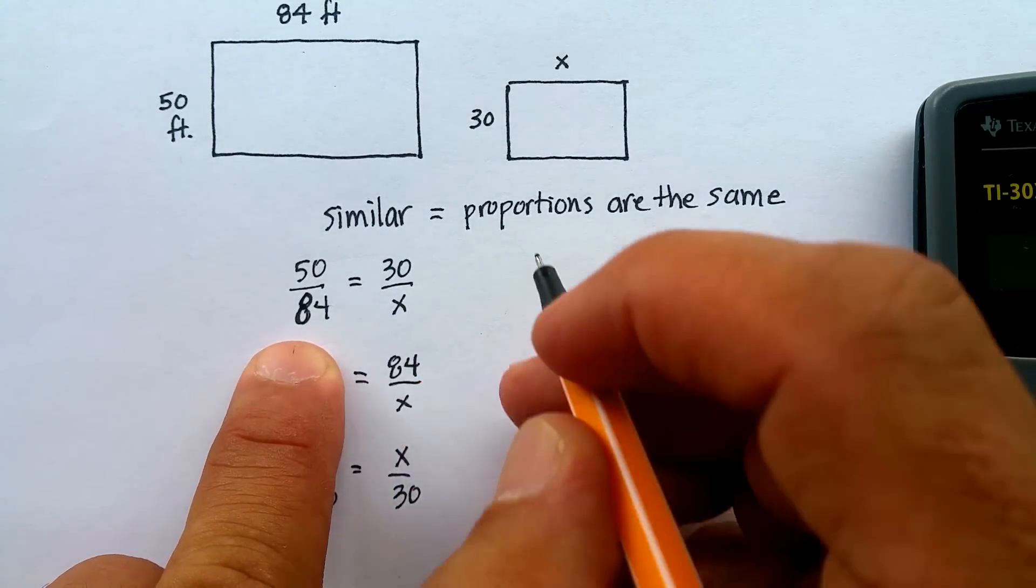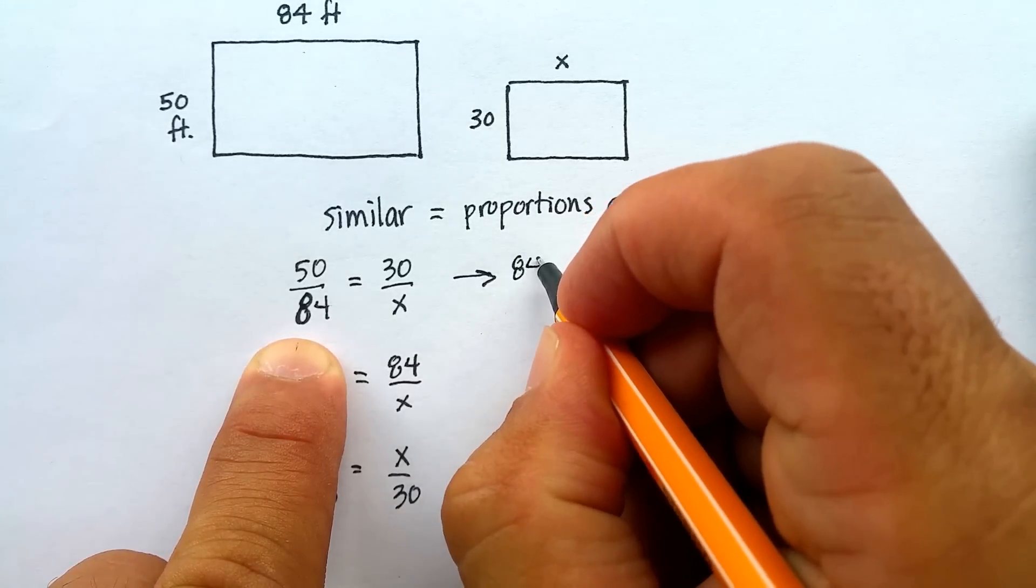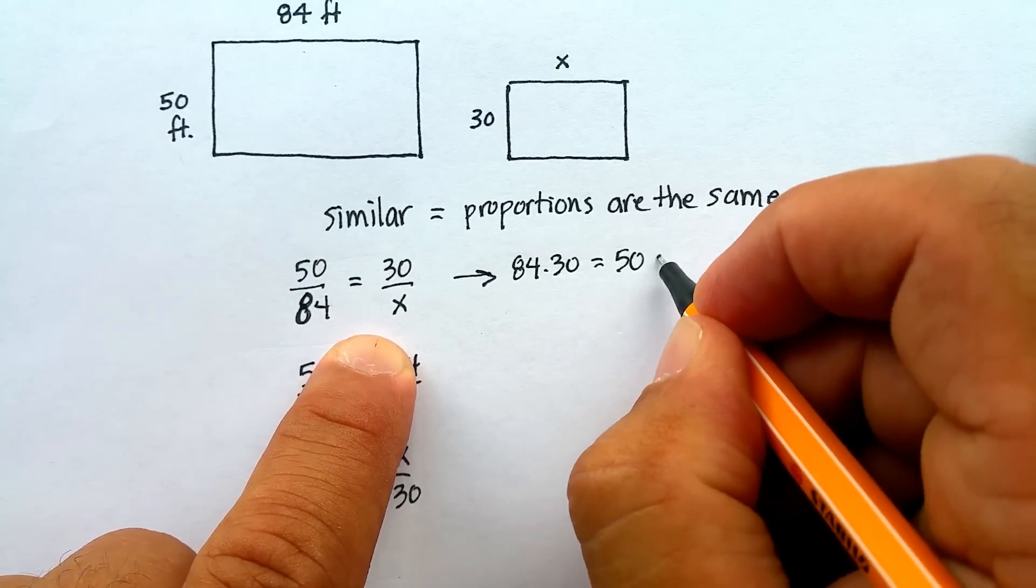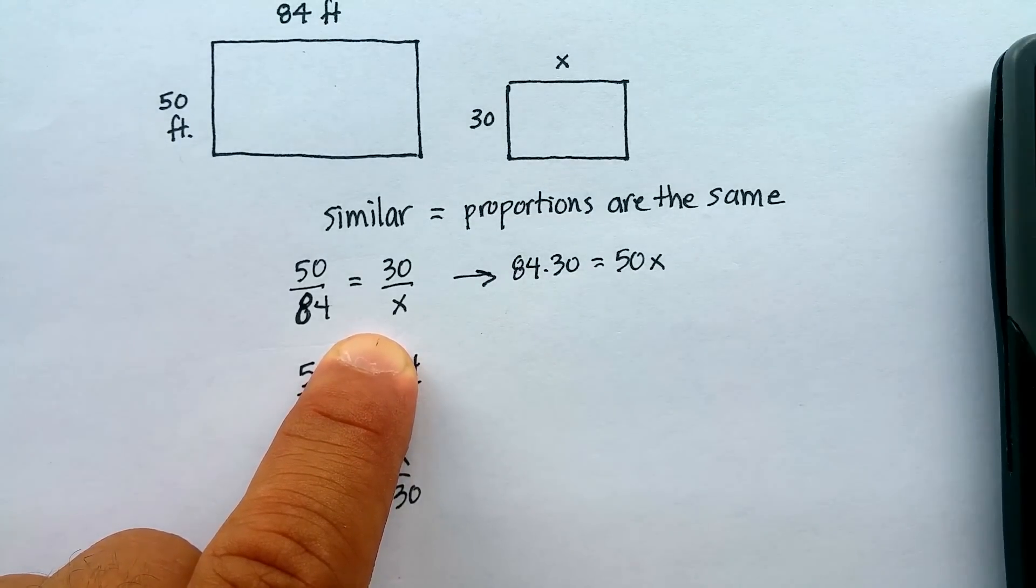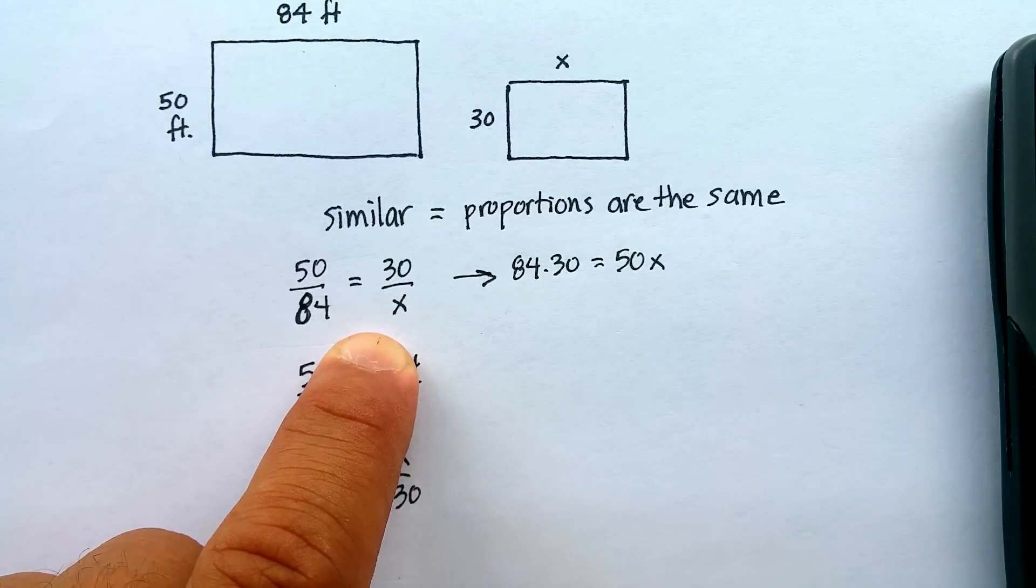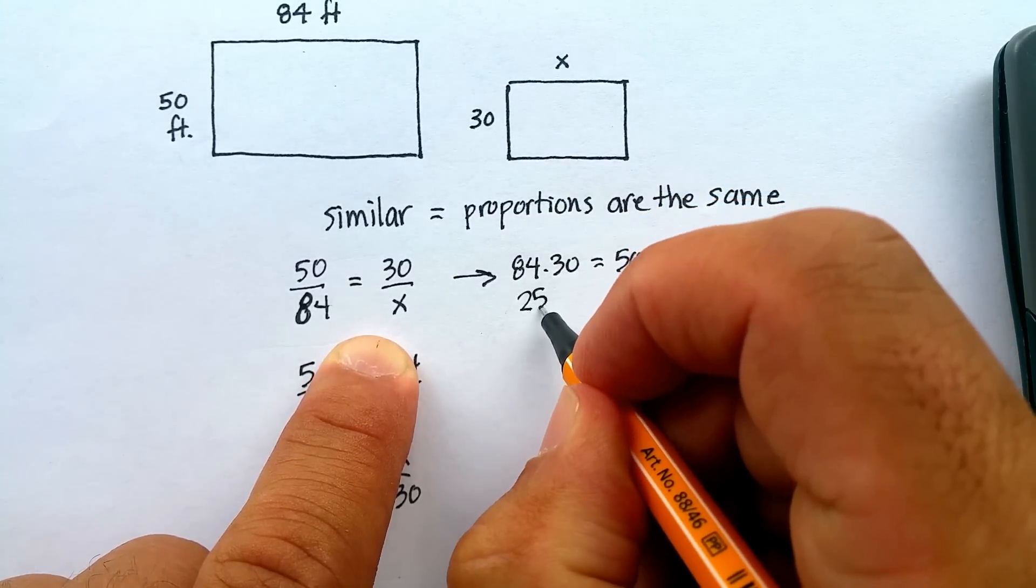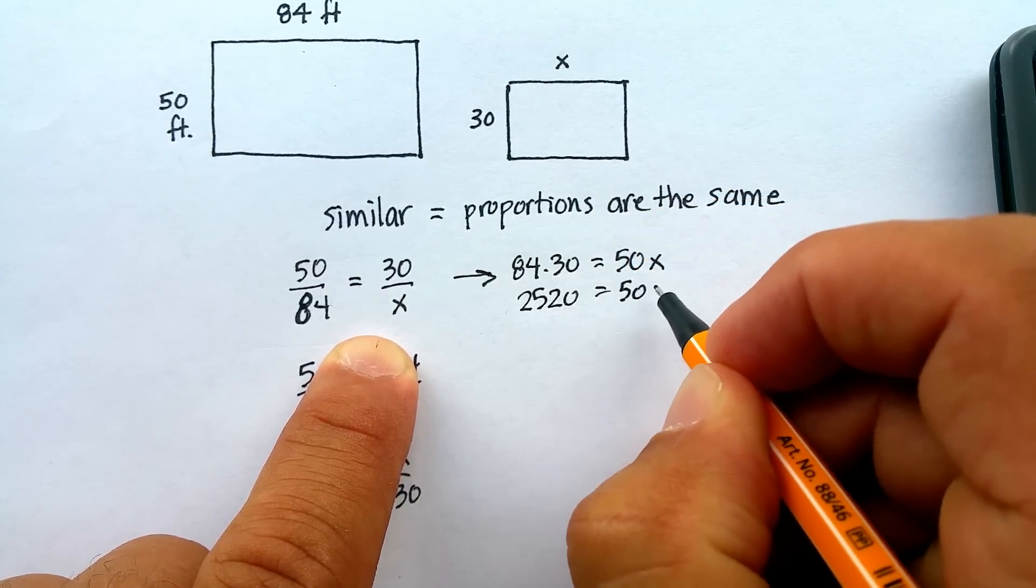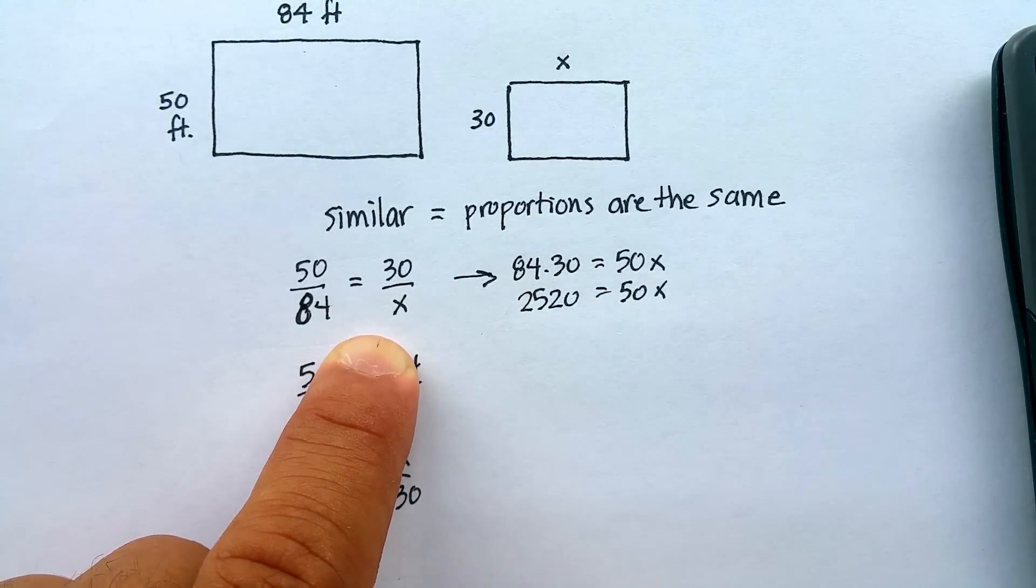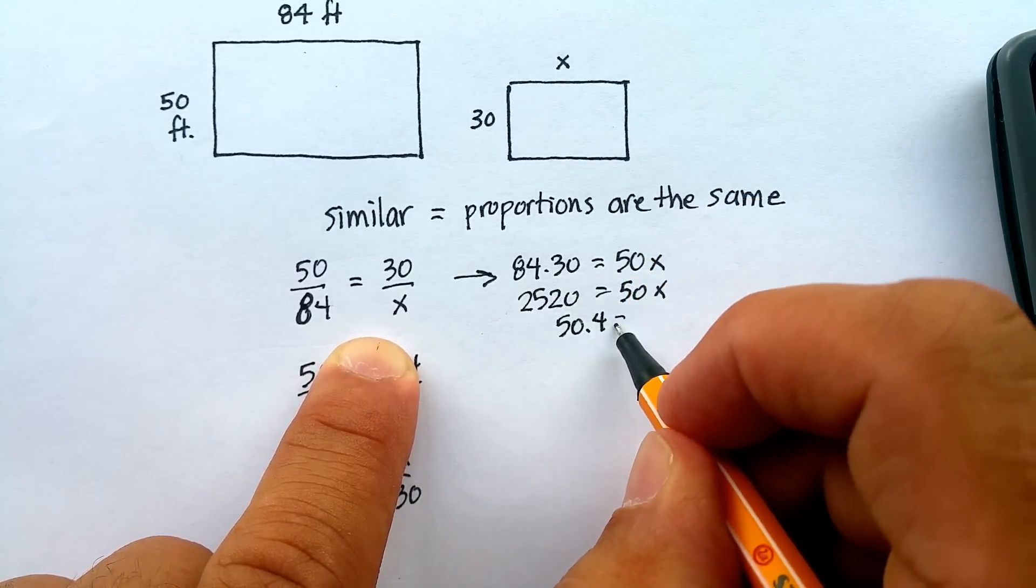I know, for example, if I do cross products, let's just do it this sideways here. I would say 84 times 30 should be equal to 50 times x. 84 times 30, let's just clear this off here. 84 times 30 will give me 2,520 divided by 50. And that would lead me to x is equal to 50.4 feet.